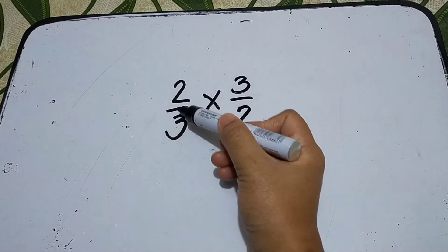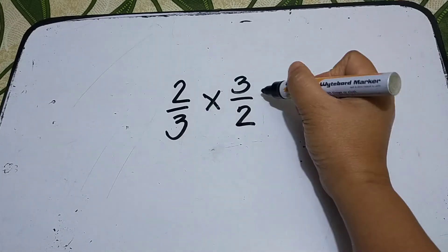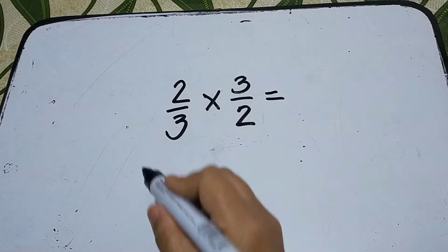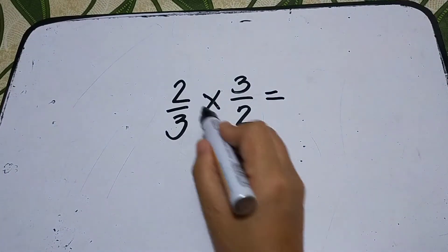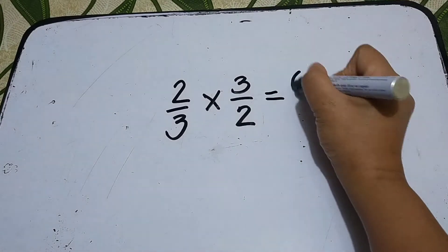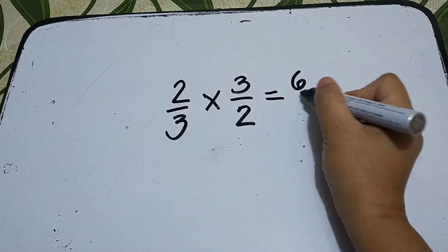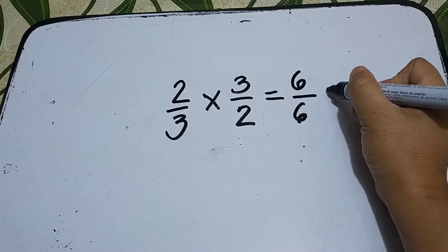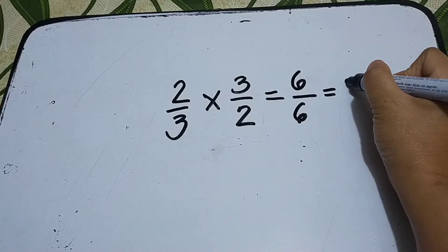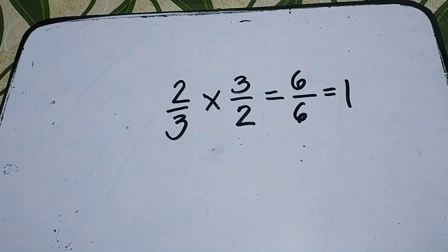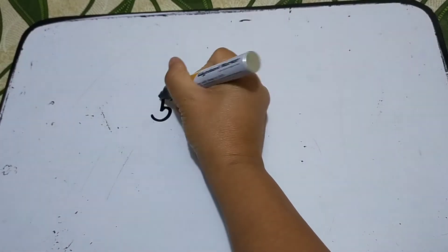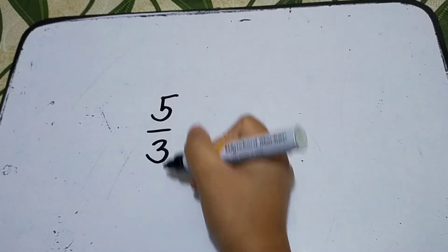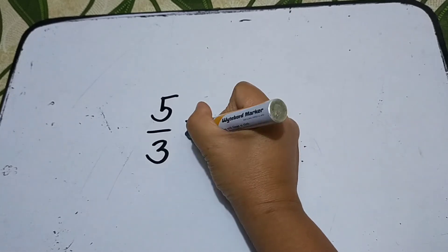Then afterwards we multiply: 2 times 3 is 6, and 3 times 2 is 6, so 6 over 6 is equal to 1. Another example: 5 over 3. The reciprocal of 5 over 3 is 3 over 5.